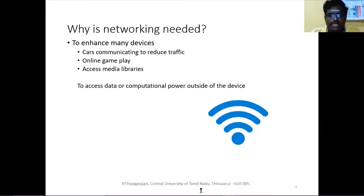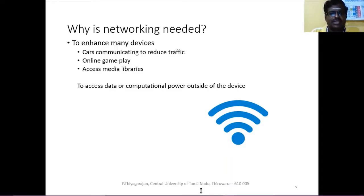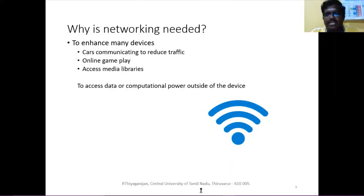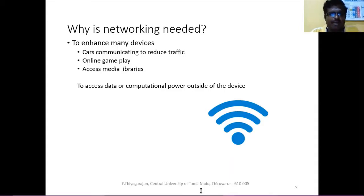Cars can talk to each other and also talk to a centralized database to get mapping information. Another benefit of a network is online gaming. We used to play a lot of online games — you connect with people around the world. For example, if you play PUBG, you do not know whether the other player is from India or abroad. You get a rich gaming experience online, and it opens a whole world, connecting to different people and things you cannot do locally.